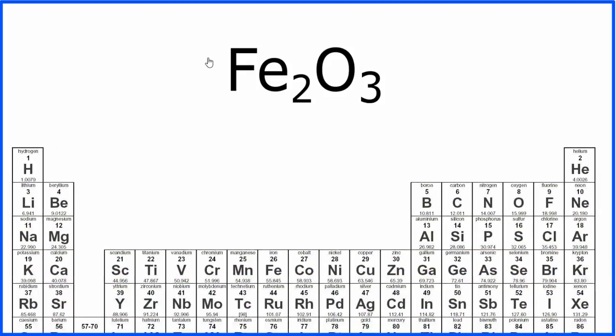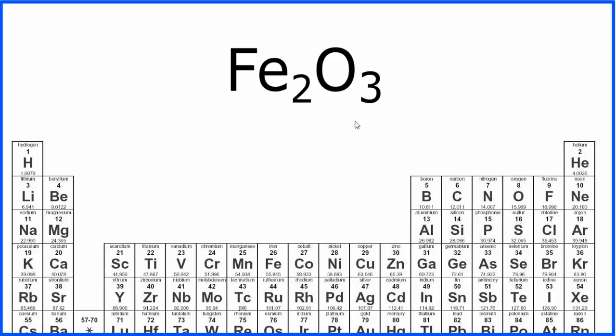First thing we need to do is write down the molecular weight of each element here in this compound. So we know iron on the periodic table is 55.85, and that's grams per mole.